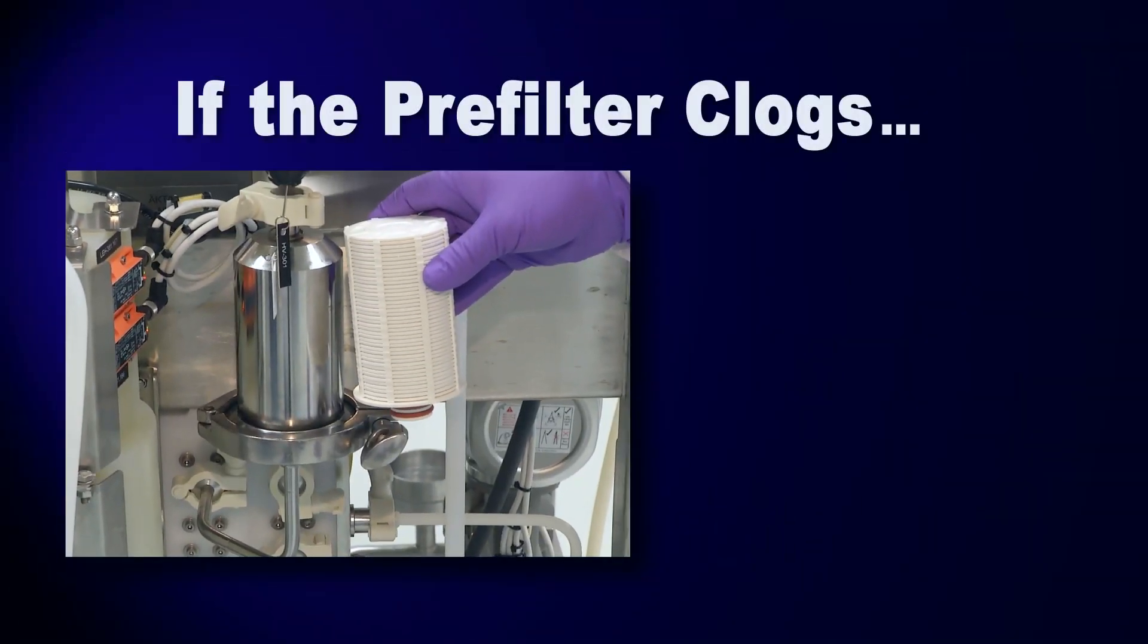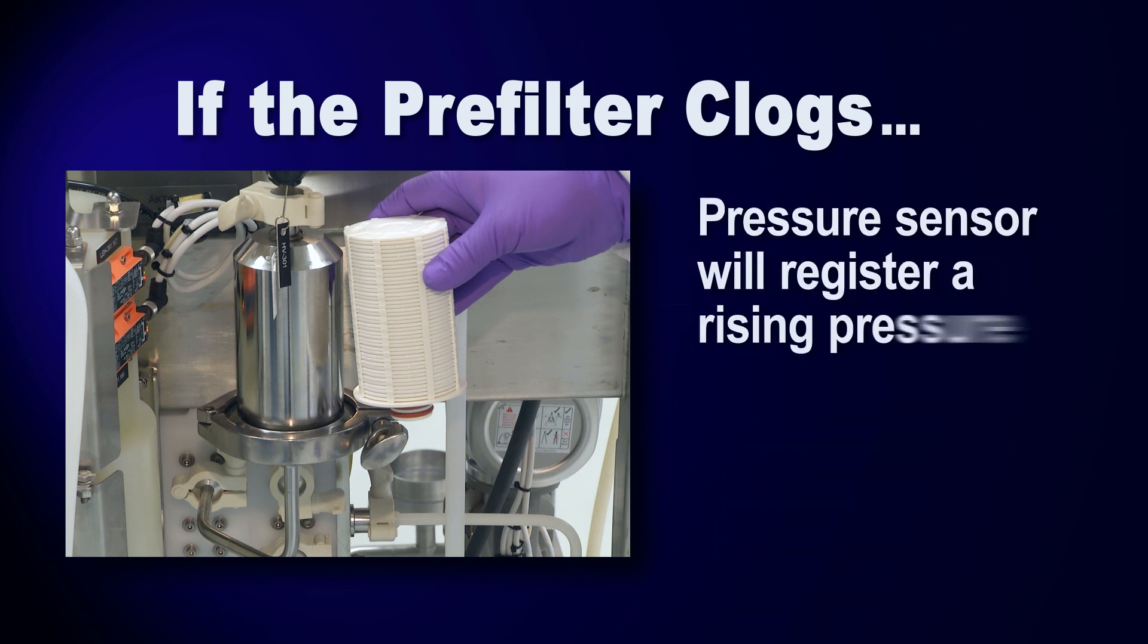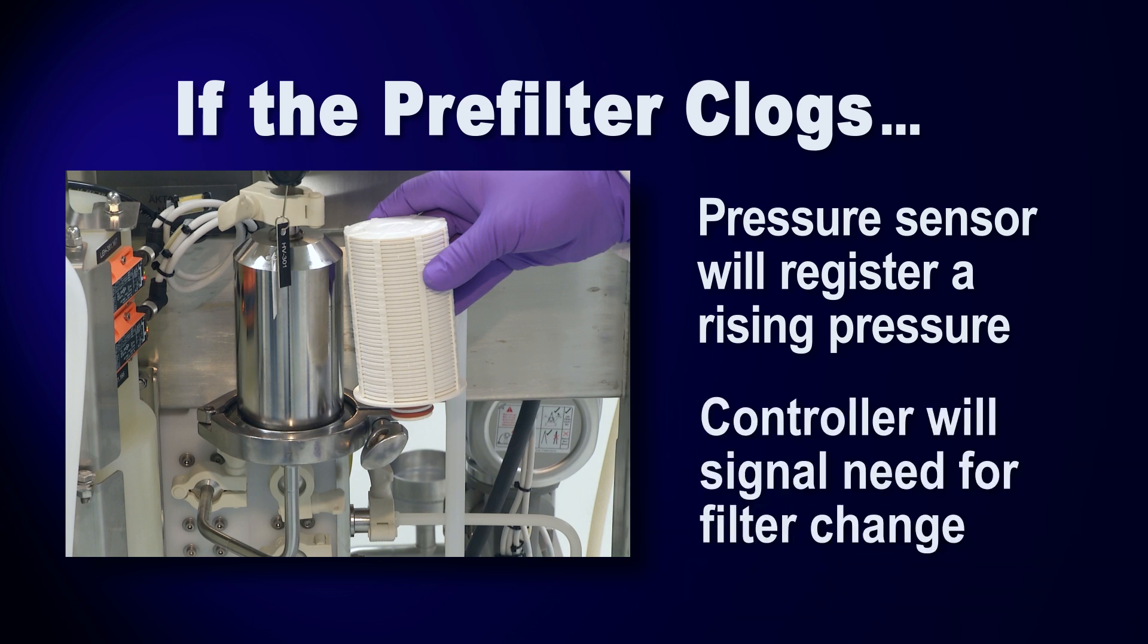If the pre-filter begins to clog, the pressure sensor at the inlet side of the filter will register a rising pressure, and the controller will signal the need for a filter change.